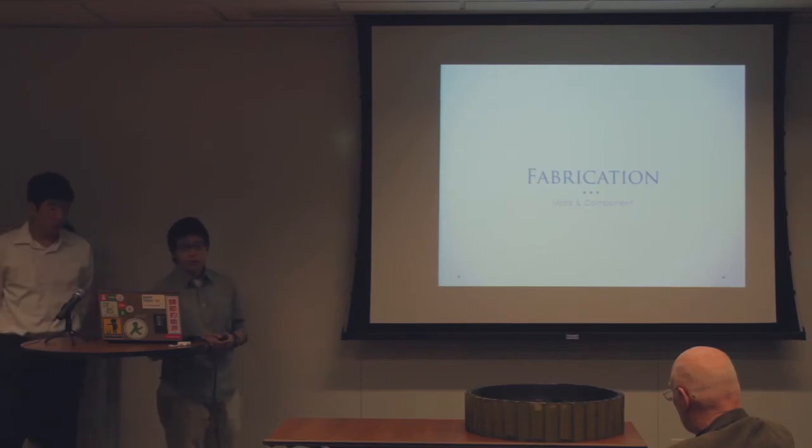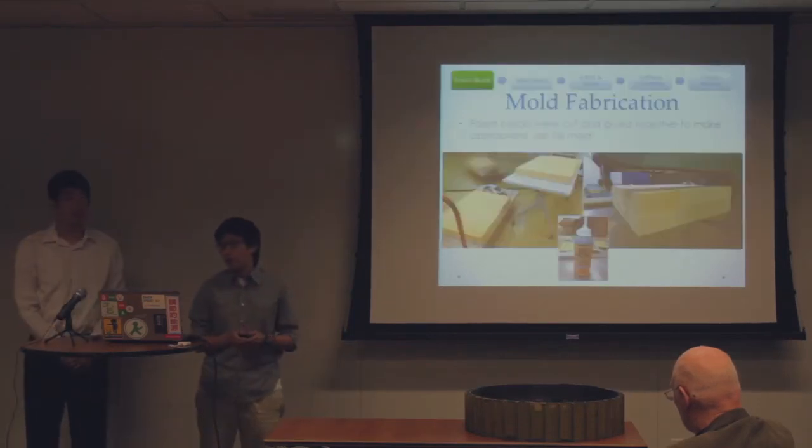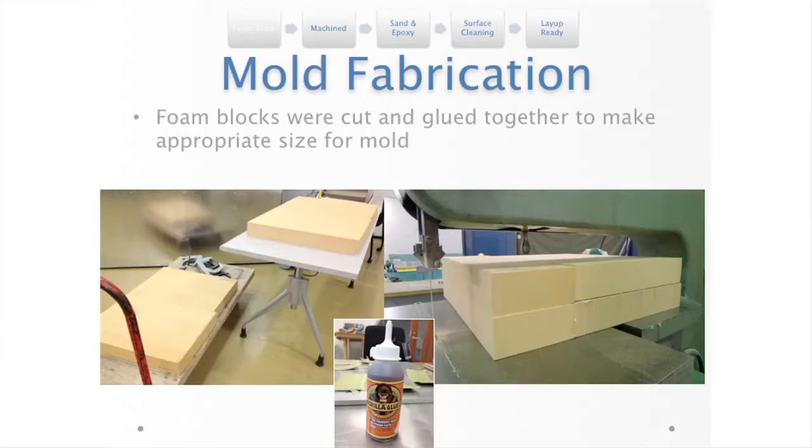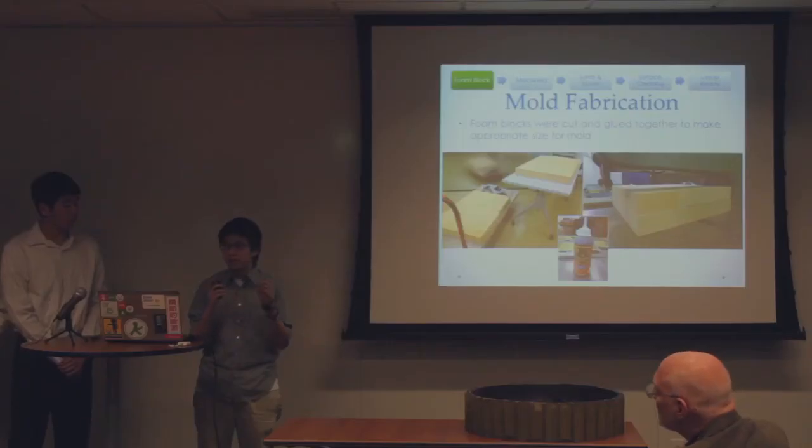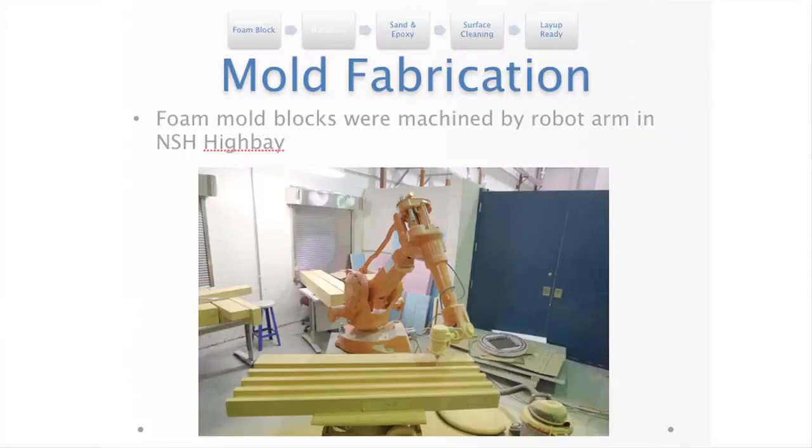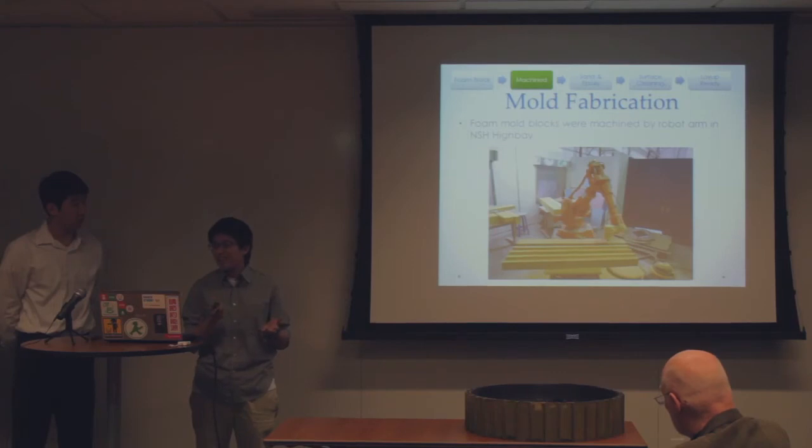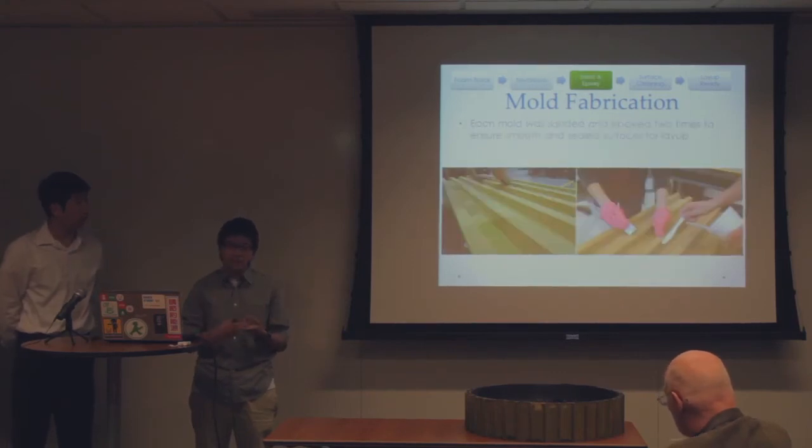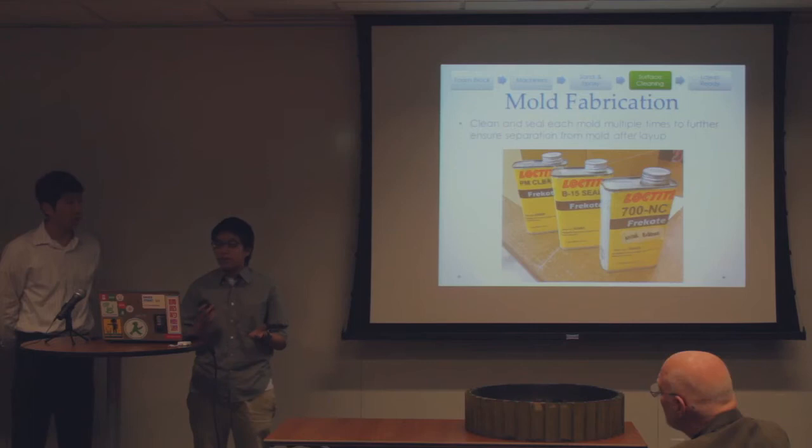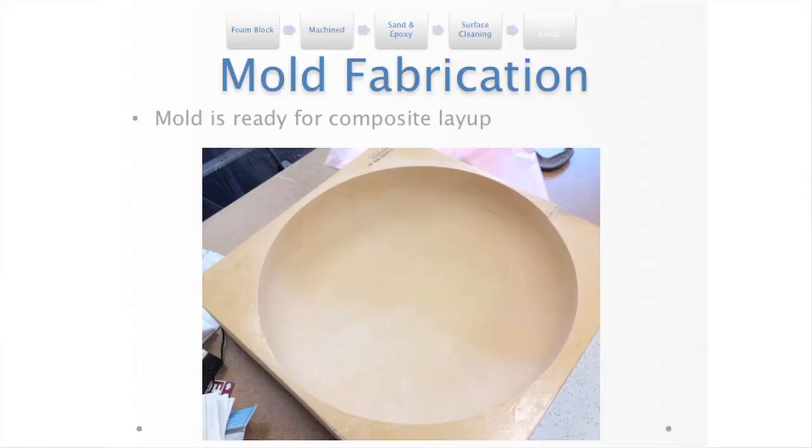And now, I'm going to talk about the process of fabrication. First is about the mold. We need to glue the foam blocks together and make the gaps between as small as possible. Then we machine it with CNC world salmon robot arm. And then it's a long process about sanding, epoxy, and sanding to make sure it's smooth. And then we can clean and seal the surface to make sure the separation between the parts and the mold. Then the mold is ready for layup.